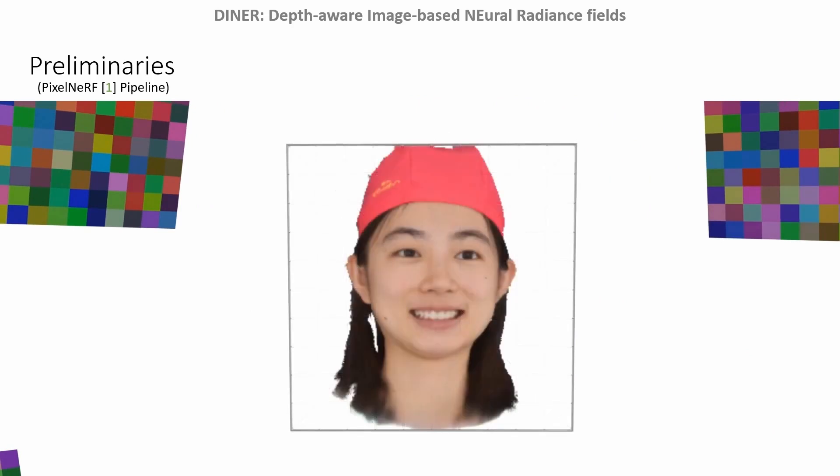During training, the L1 distance between predicted ray colors and ground truth pixels is minimized.